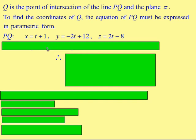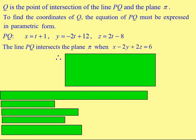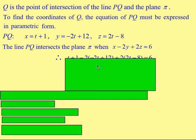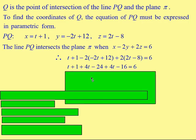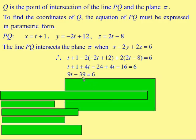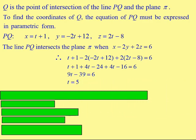The reason we write it in parametric form is because PQ intersects plane pi when x - 2y + 2z = 6. We substitute x = t + 1, y = -2t + 12, and z = 2t - 8 into the plane equation. Multiplying out and simplifying gives 9t - 39 = 6, meaning 9t = 45, so t = 5.